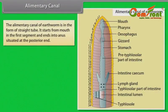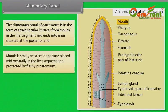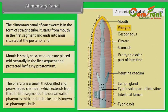Elementary Canal: The elementary canal of earthworms is a straight tube. It starts from the mouth in the first segment and ends at the anus at the posterior end. The mouth is a small crescentic aperture placed mid-ventrally in the first segment and protected by the fleshy prostomium. The pharynx is a small, thick-walled, pear-shaped chamber extending from the third to fifth segment, with a thick bulb-like dorsal wall known as the pharyngeal bulb.